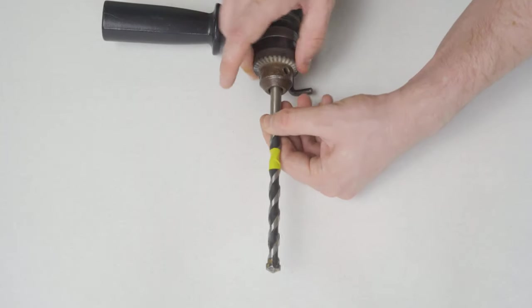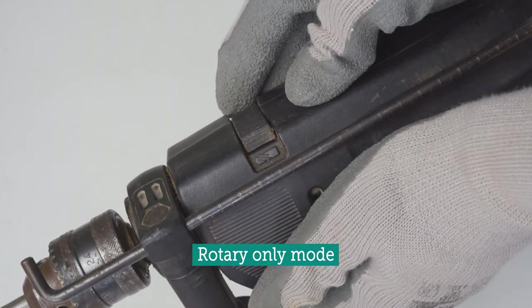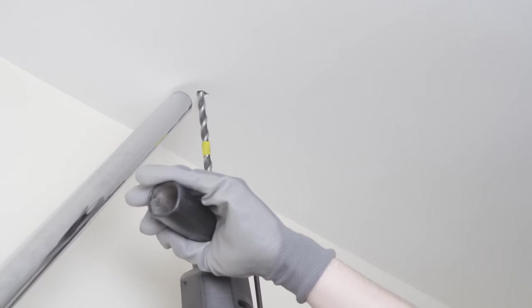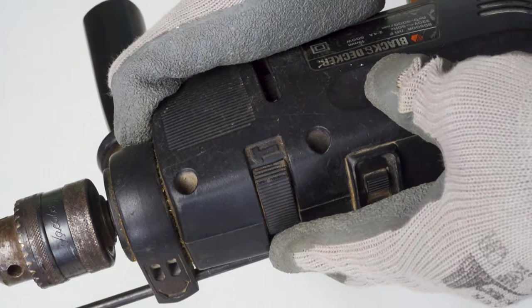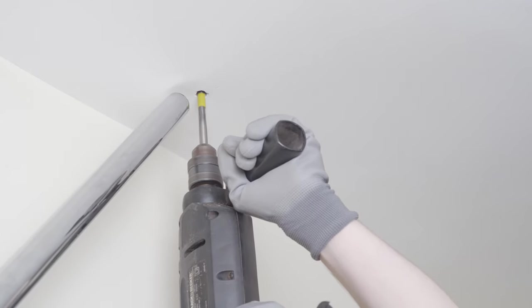For achieving neat hole edges, it's advisable to initially switch off the hammer mode of the drill. So, we are now drilling the first few millimeters in rotary mode only. Then, we turn on the hammer function of the driller to have faster drilling progress. And continue drilling until we reach the marked drill depth.